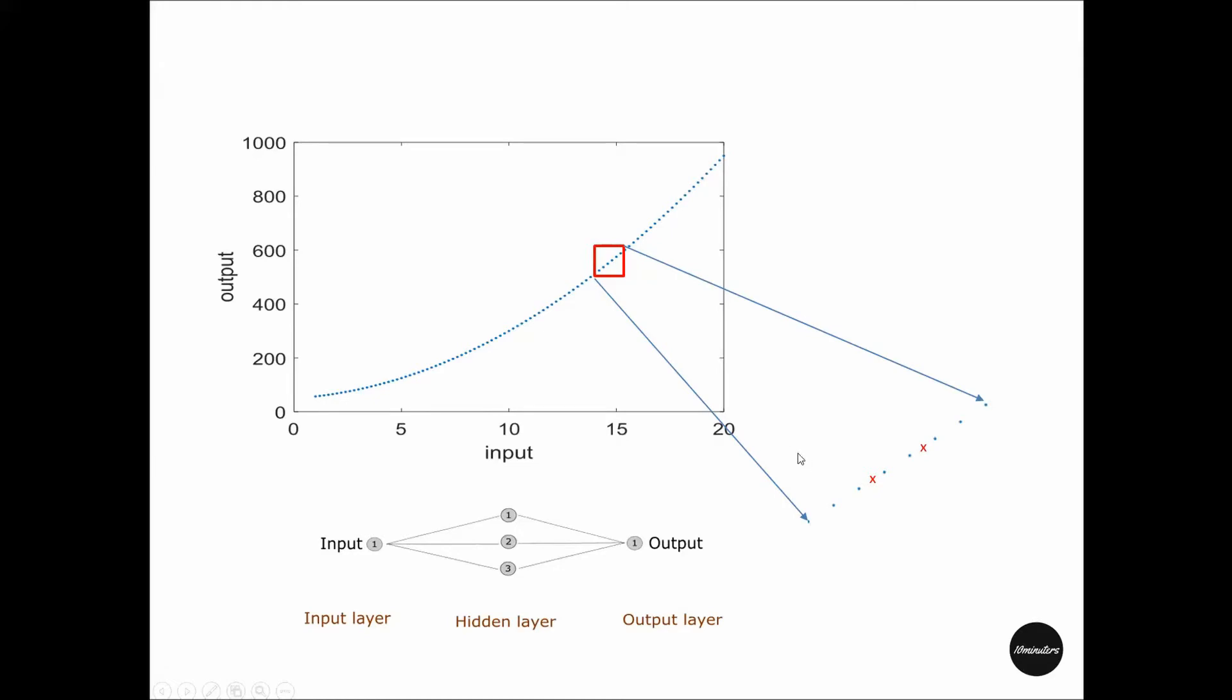An easy workaround for your friend is to build a three-layer artificial neural network. This type of network is very useful in engineering applications. Your friend already knows the values for the input layer—the x coordinates of those points.